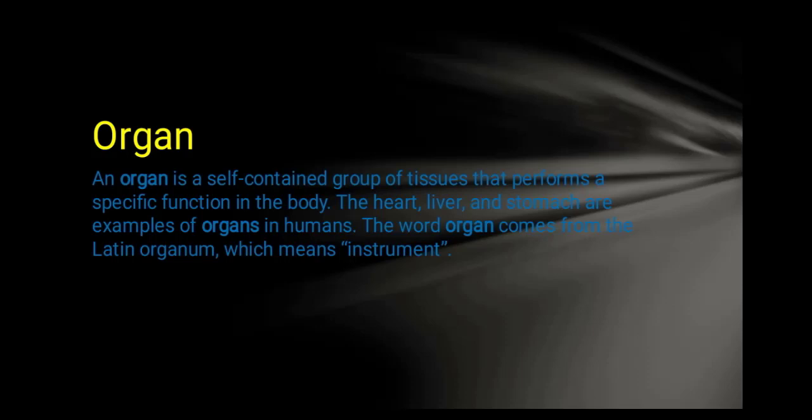An organ can perform more than one function, which means there can be more than one type of cell. In our body, the liver, stomach, and heart are such organs which have different functions.